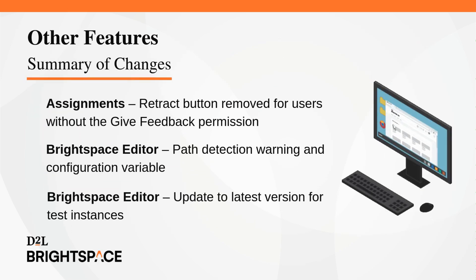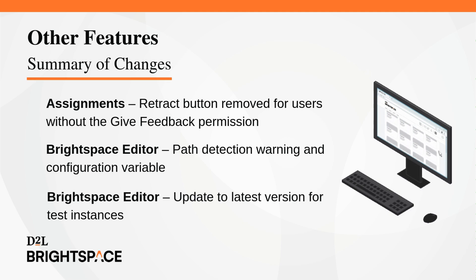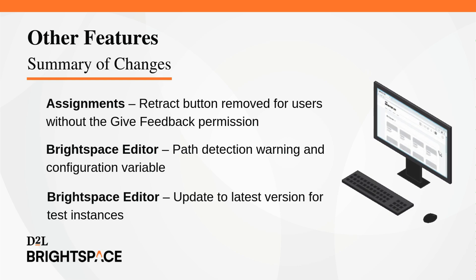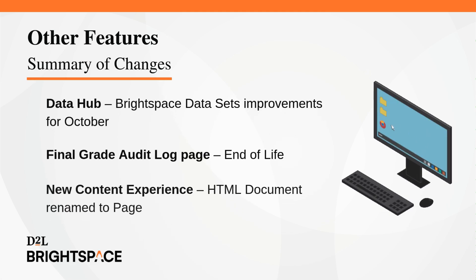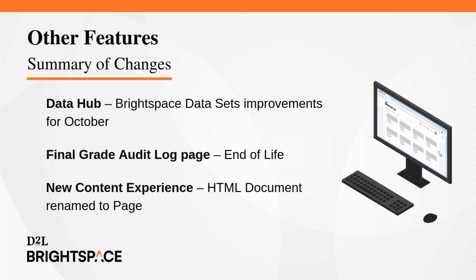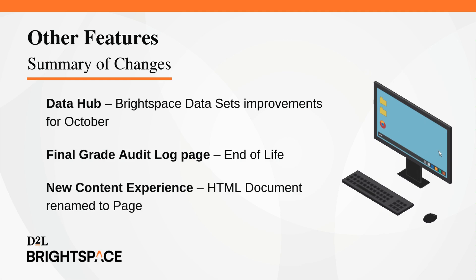Finally, let's take a quick look at the other features for this month's release. Assignments: Retract button removed for users without the Give Feedback permission. Brightspace Editor: Path detection warning and configuration variable. Brightspace Editor: Update to latest version for test instances. Data Hub: Brightspace data sets improvements for October. Final Grade Audit Log page: End of life. And finally, New Content Experience: HTML document renamed to Page.